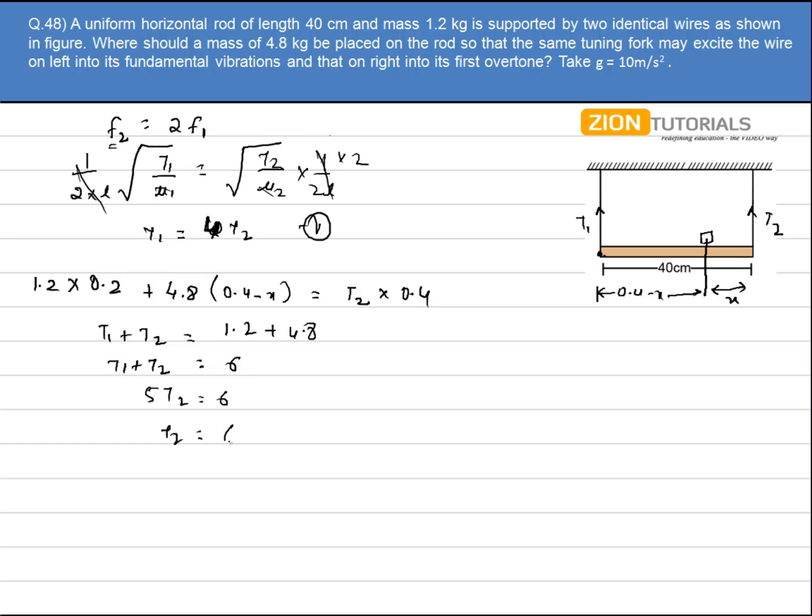So t2 comes out to be 6 by 5, that is 1.2 newton, and t1 will be 4.8 newton. So this will be t2 and this one will be t1.